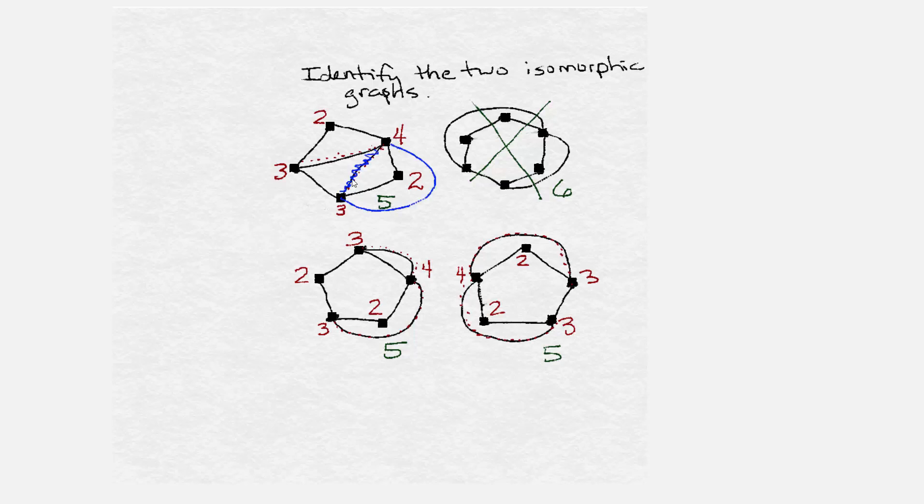For example, let's imagine stretching this string that I have scribbled through in blue here out outside the pentagon so that it wraps around the graph like the other two graphs. Similarly, I can take this edge that I've scribbled out in green and stretch it outside of the pentagon so that it wraps around the outside.